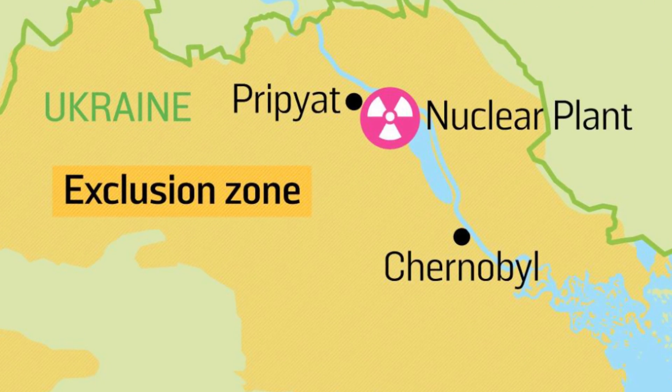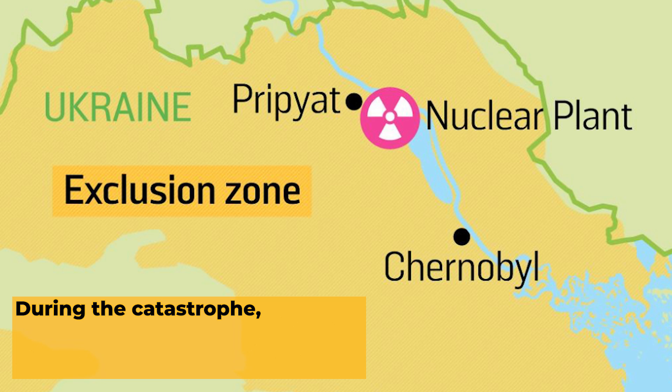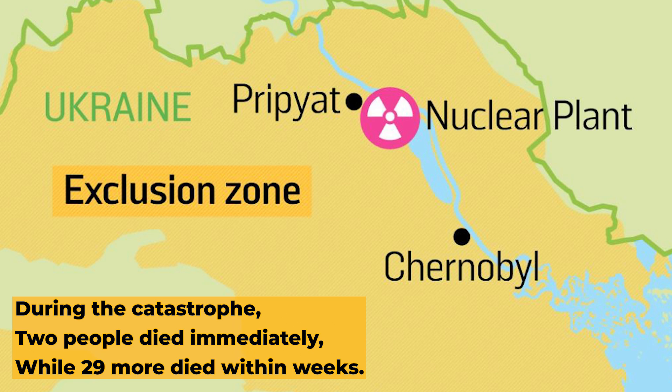Near this power plant, there were thousands of people living in a purpose-built town. In the disaster, two people died immediately, and after a few weeks there was a report of 29 more deaths. Beyond that, thousands of people eventually died from cancer and other diseases caused by this disaster.